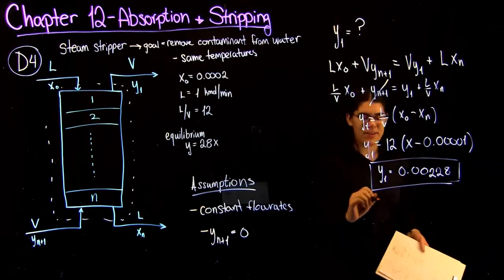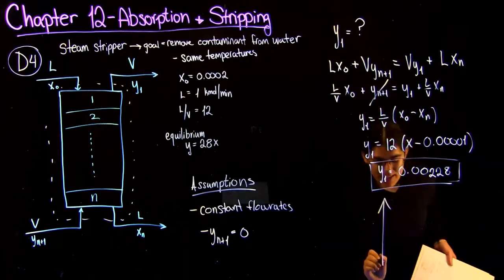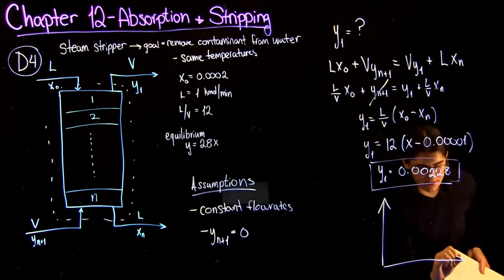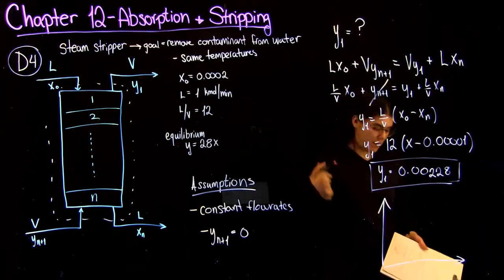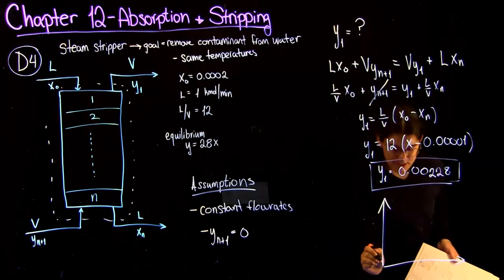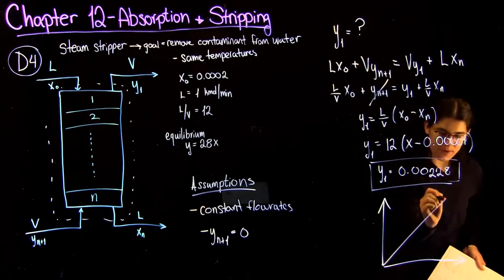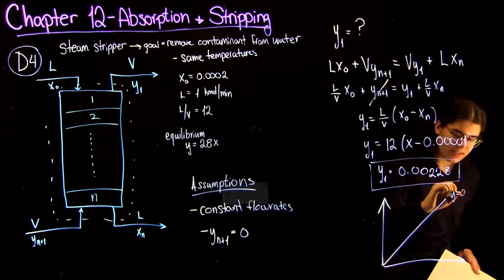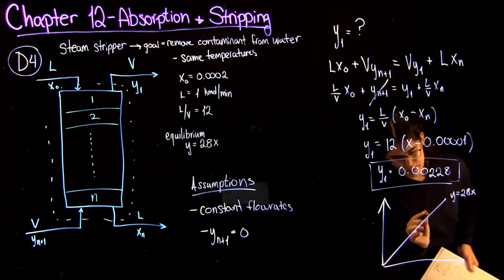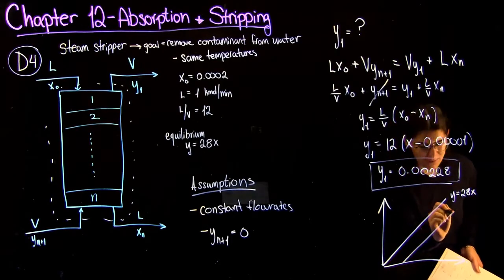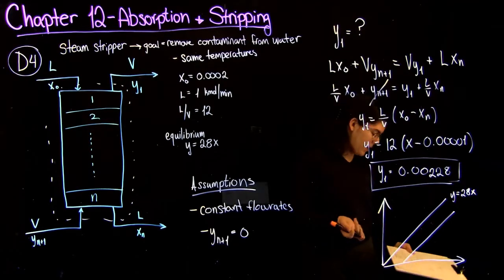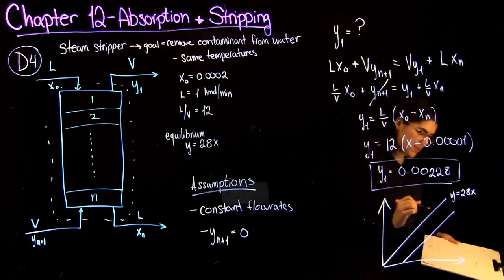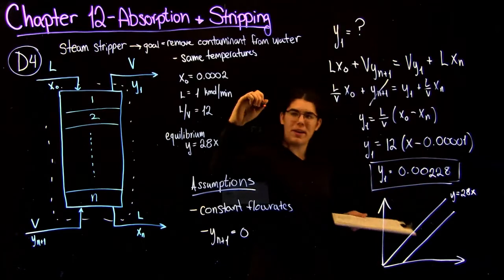The only difference is that now it's going to be two straight lines as opposed to a curvy equilibrium line. So because we're doing a steam stripper here, your equilibrium line is going to actually be on top. So when you plot it, you'll see that it's going to look like this. So you're going to have your equilibrium line here, and you're going to have your operating line down here. The two most important points you need to plot your operating line in this case are going to be, I'll write it over here, your Xn, Yn plus 1, and your X0, Y1.